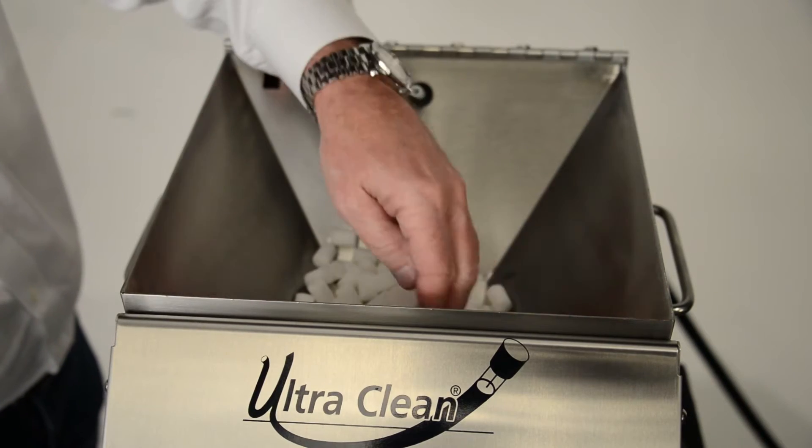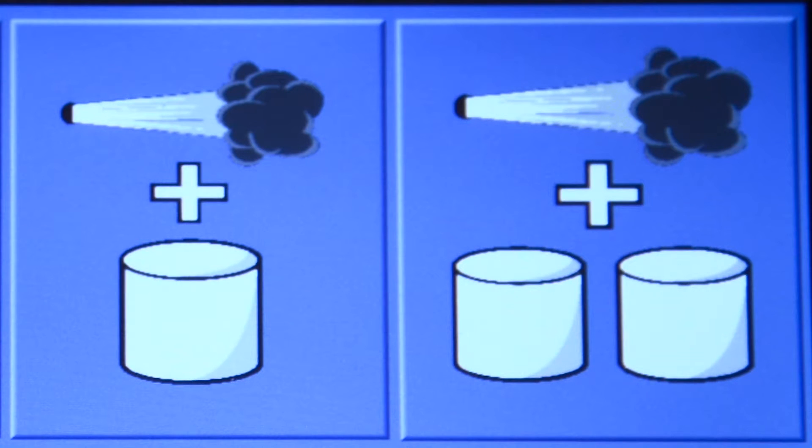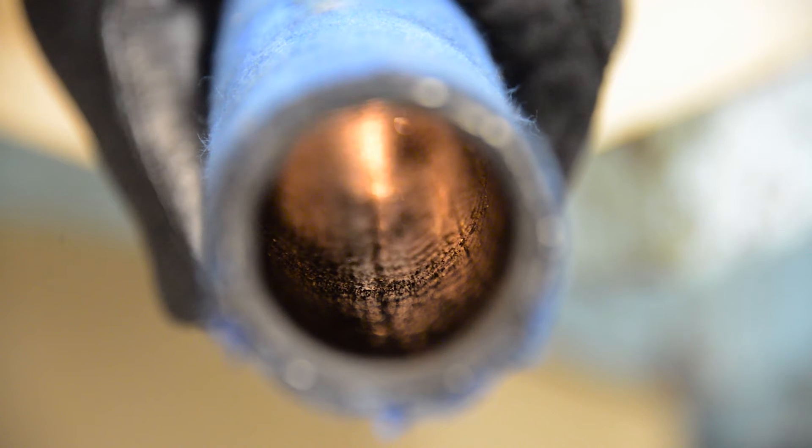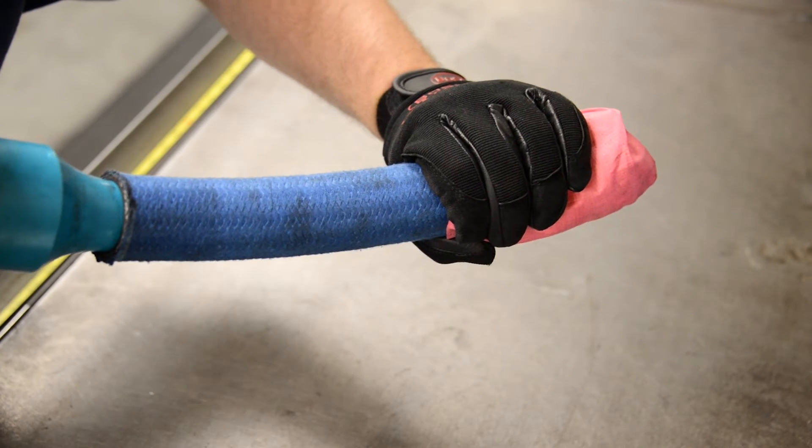Two air purge cleaning modes are available for applications that require expelling large contamination particles from a hose or tube, prior to firing a projectile or two through the assembly.